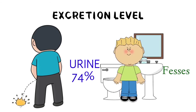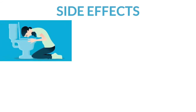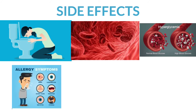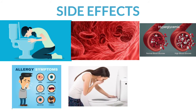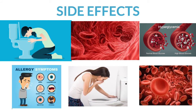The drug is 18% excreted. The side effects are nausea, anemia, hyperglycemia, and allergic reactions. Anemia means the blood level is less — the blood is low in the patient's body, which causes anemia.